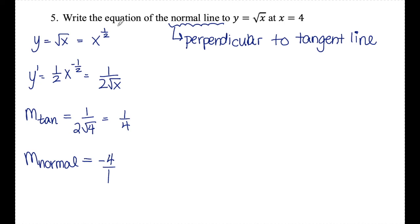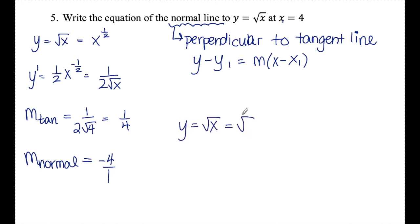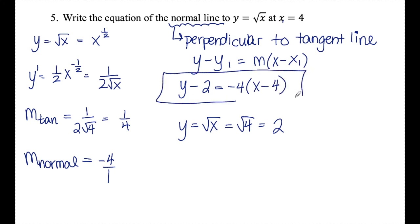This normal line still passes through y equals rad x at x equals 4, and I'll use y minus y1 equals m times x minus x1. They gave me x1, I just found m as negative 4. The last thing I need is y1, which comes from plugging x equals 4 into the original function rad x — giving me 2. Now I have everything: y minus 2 equals negative 4 times x minus 4. There's the equation of the normal line to y equals rad x at x equals 4.